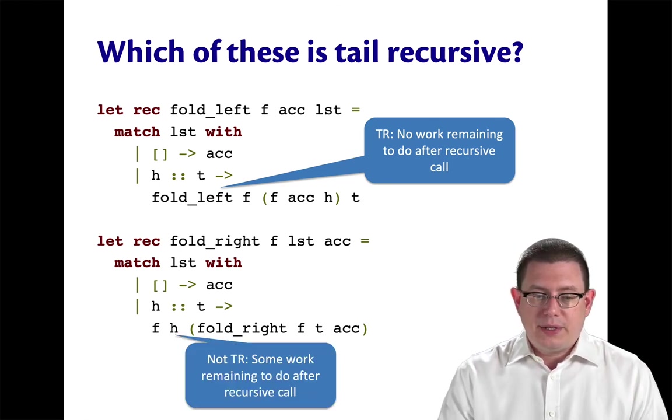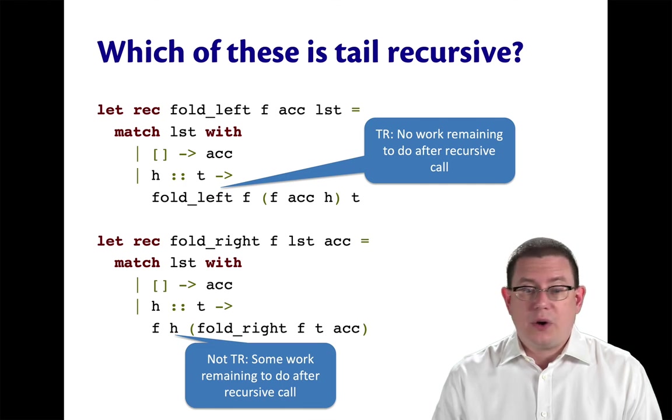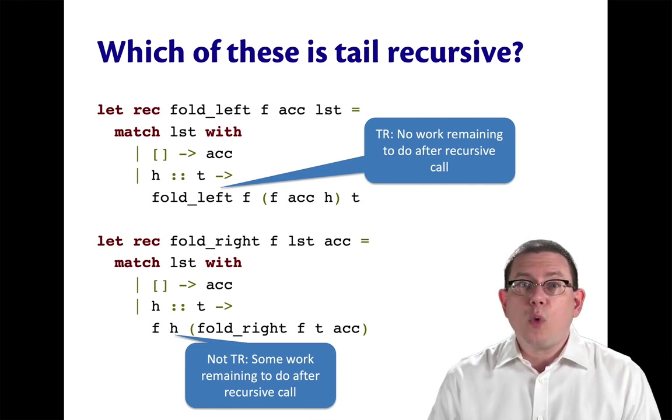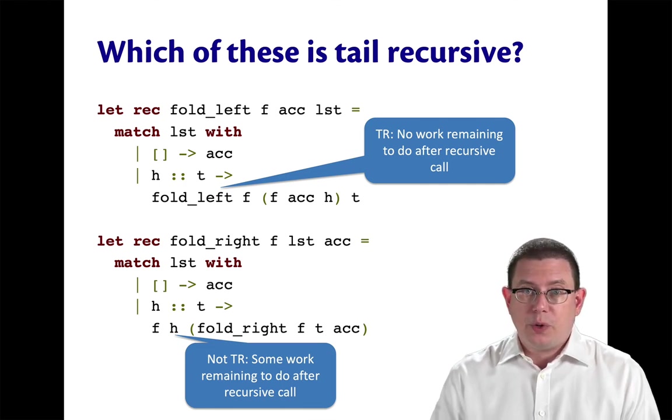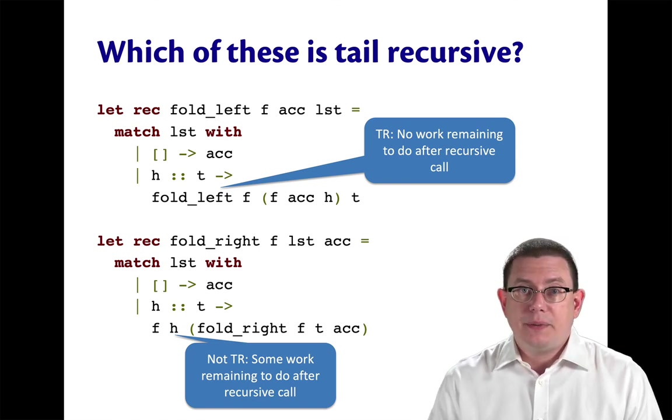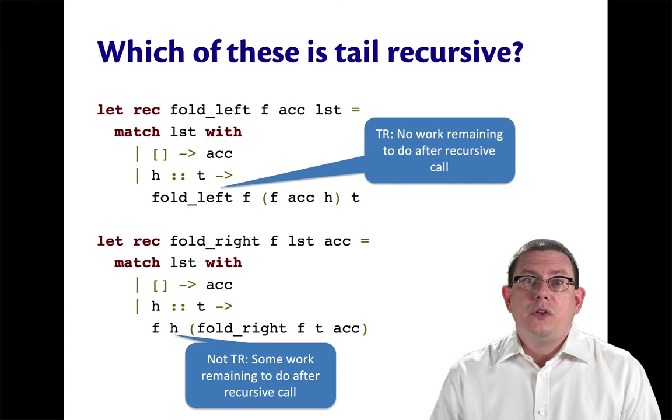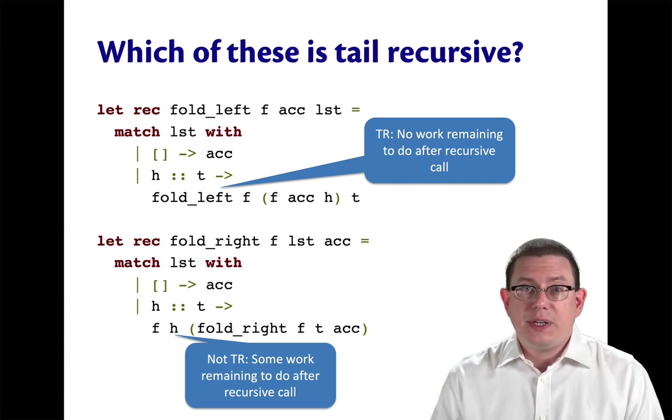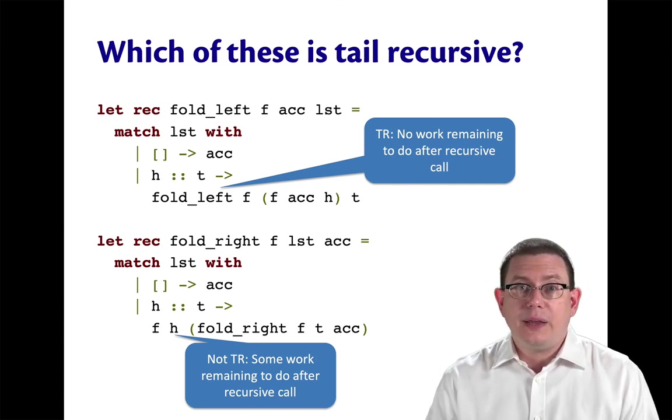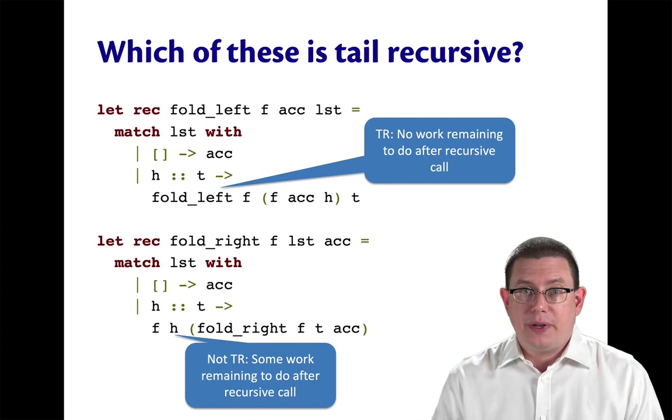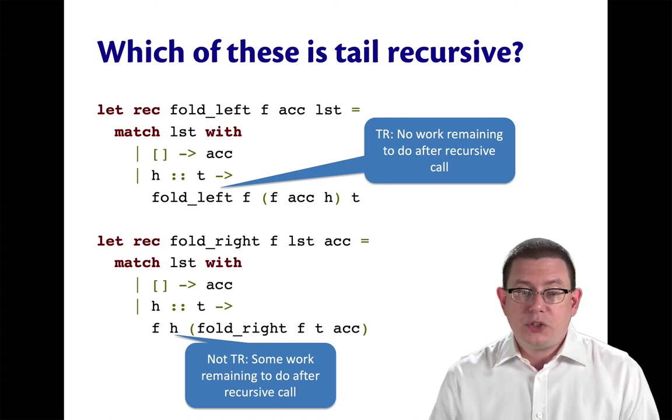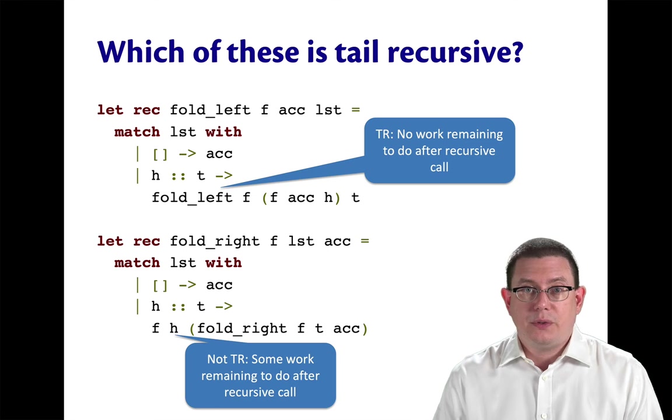On the other hand, fold right, it's not tail recursive. There is some work remaining to be done there after the recursive call. In particular, function f needs to be applied. So fold right is going to take stack space that is linear in the size of the list argument. That might also drive your choice as to which one of these you want to use.